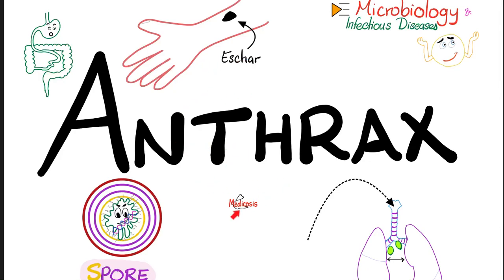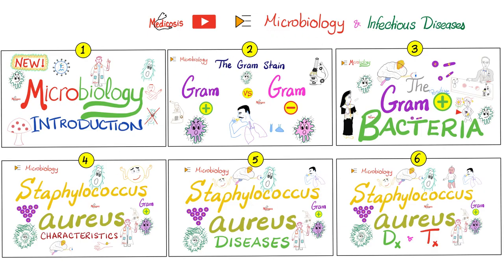Hey guys, it's Medica with this Perfect Sinaitics, where medicine makes perfect sense. Let's continue our microbiology and infectious diseases playlist. In previous videos, we talked about endospores, and we talked about the difference between exotoxin and endotoxin. Today, let's focus on anthrax as a disease. If you want to watch Bacillus anthracis — the bacteria — refer to the previous video. And look at this widened mediastinum here. Watch these videos in order.